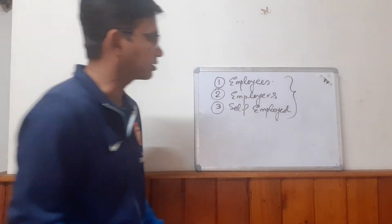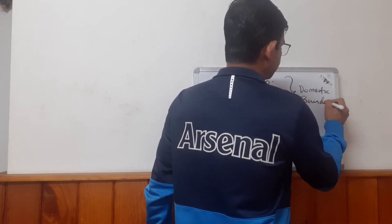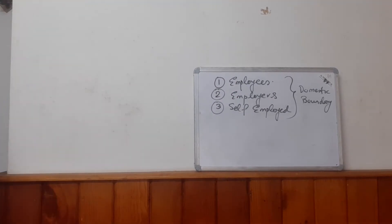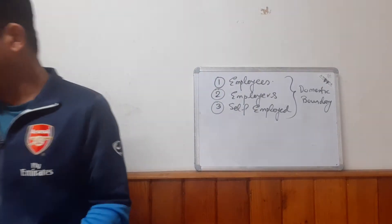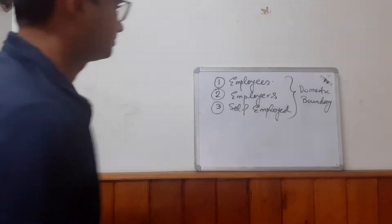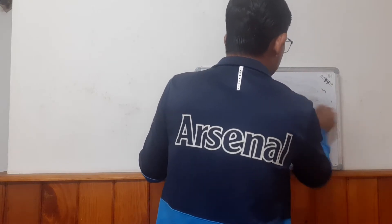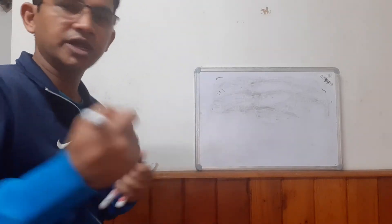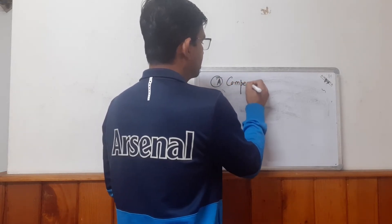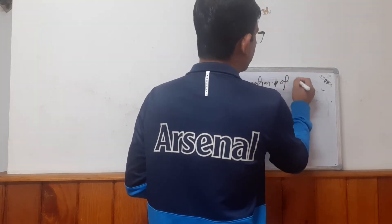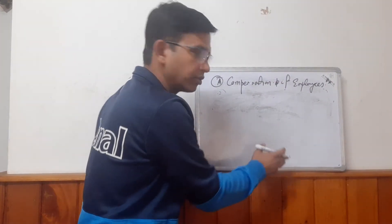We identify all factors of production within the domestic boundary of a country. First, we will consider the employees. Employees have two parts of their income. Whenever we are considering the income of the employee, we call it compensation of employees.